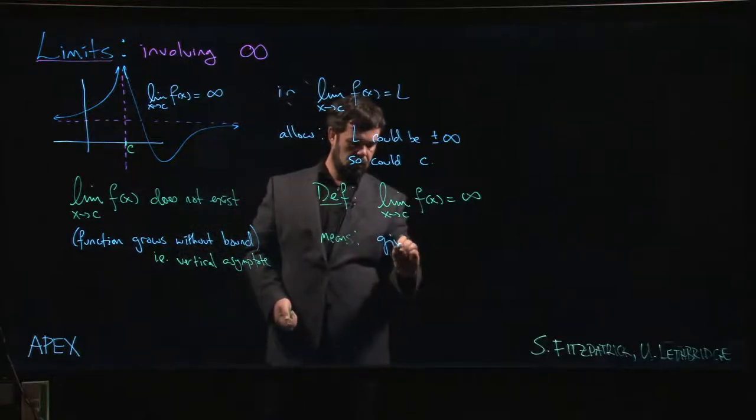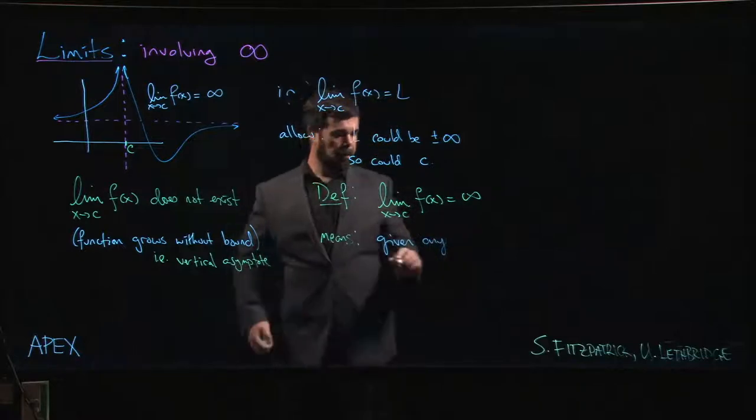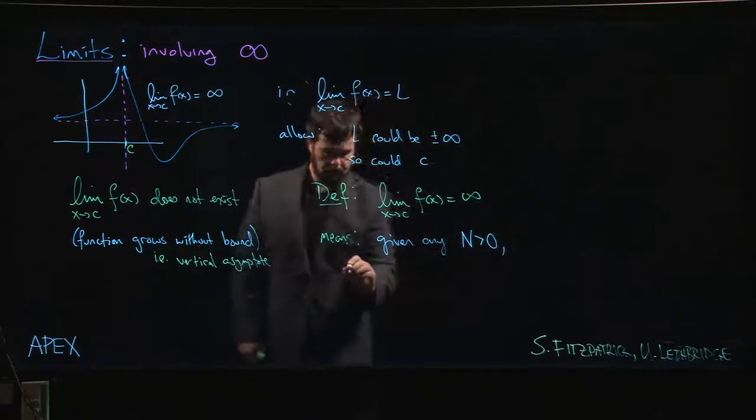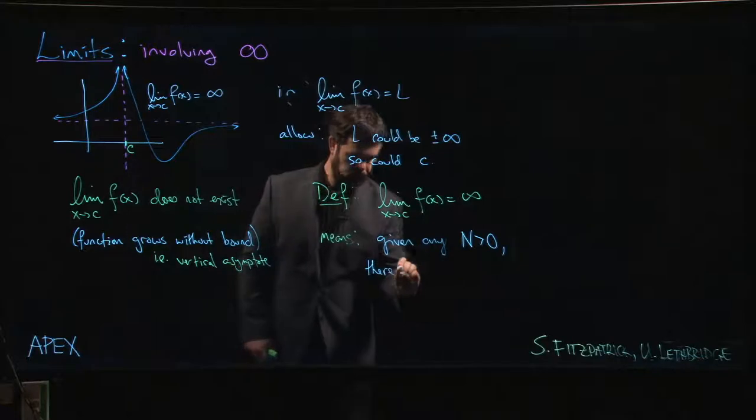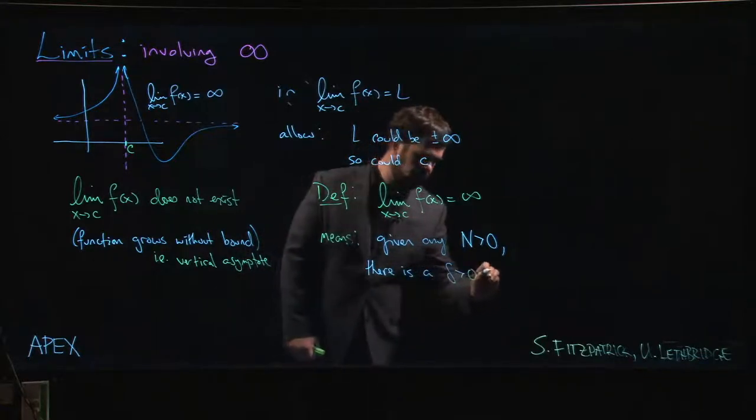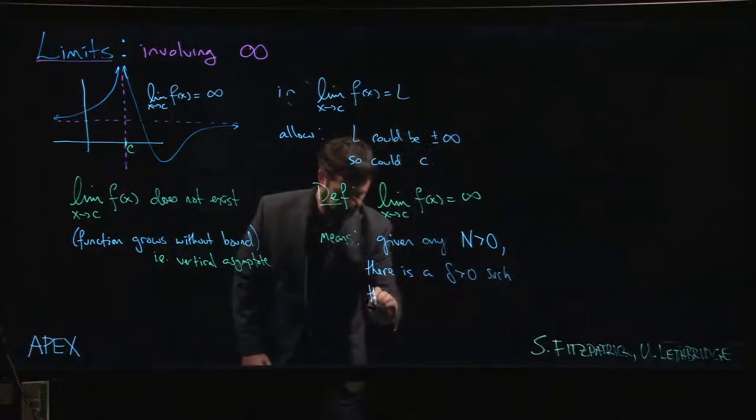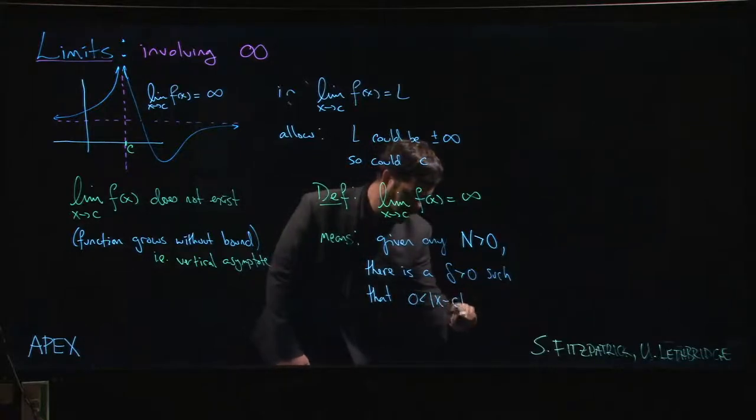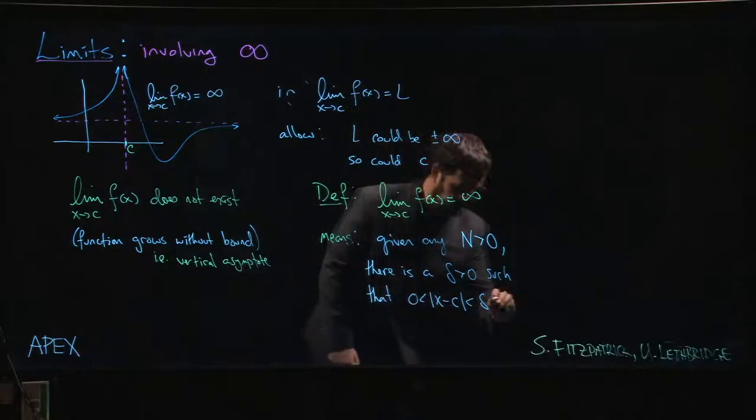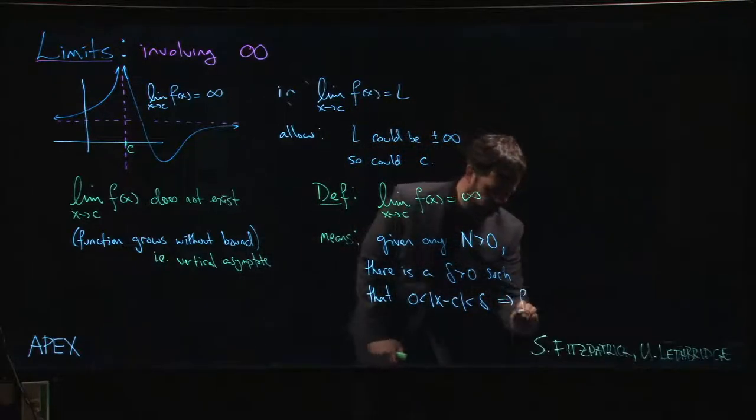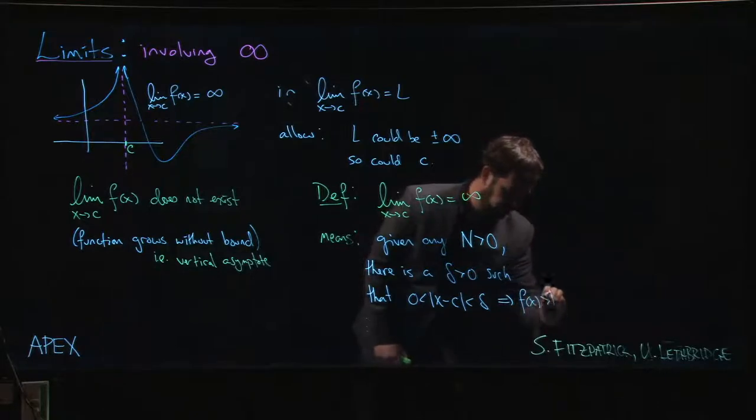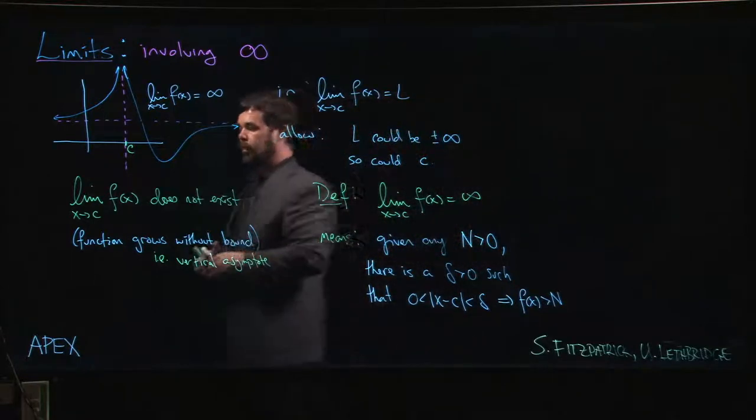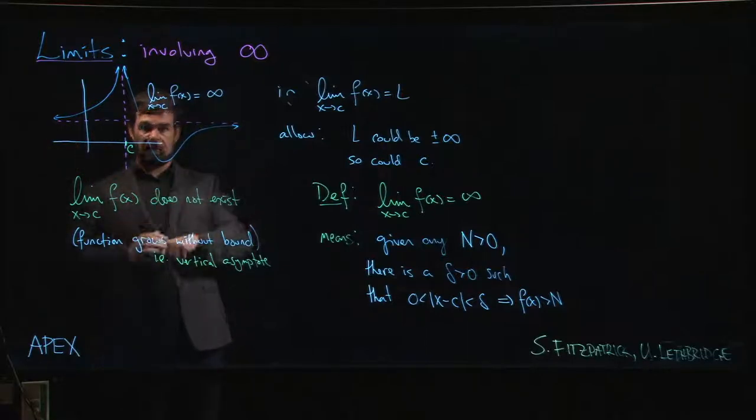Given any positive real number, let's say n, there is a delta such that if the absolute value of x minus c is between 0 and delta, that's going to imply that f of x is bigger than this really big number n. That's how we define the limit being infinite. We'll get to the limits where x goes to infinity later on.